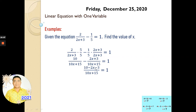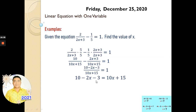Now we continue. So we simplify this — we subtract. 10 minus 3, and that would be 7 minus 2x, over 10x plus 15. So by this, we transpose this term. You can transpose this to the other side again — (10x plus 15) times 1 becomes (10x plus 15). And combine this: 10 minus 3 is 7 minus 2x.